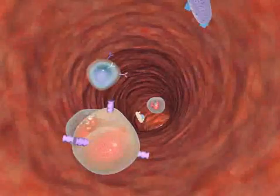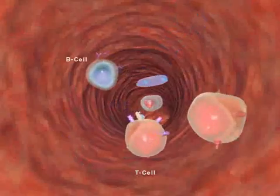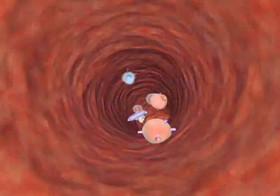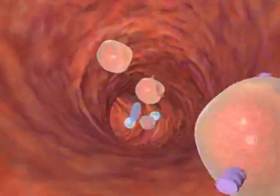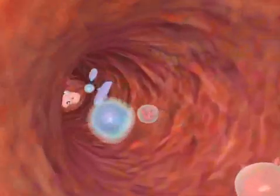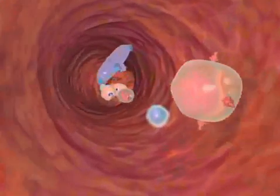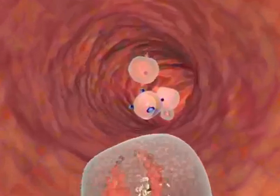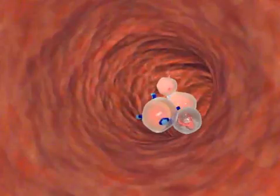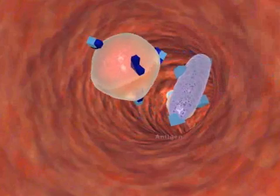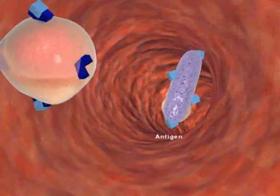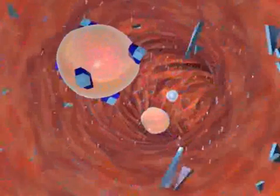The immune response involves white blood cells called lymphocytes. The most important are B and T cells. Each B and T cell is programmed to recognize and respond to one specific protein called an antigen. Different antigens are present on cell membranes. When lymphocytes encounter their specific antigens, they bind in a lock and key manner and destroy the cell.